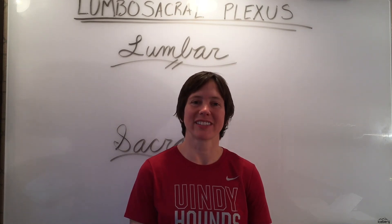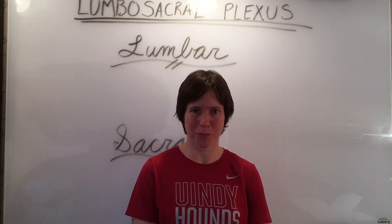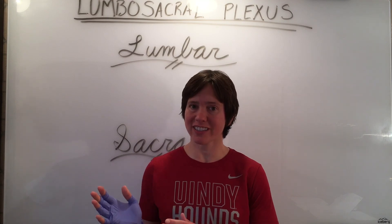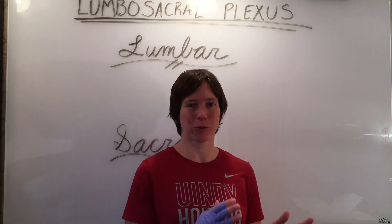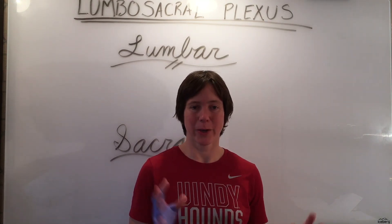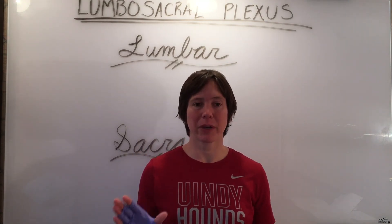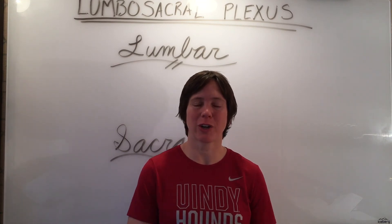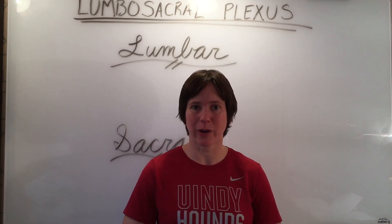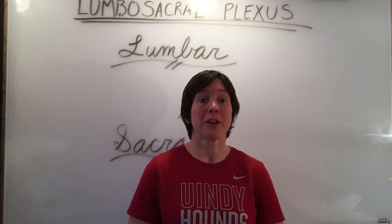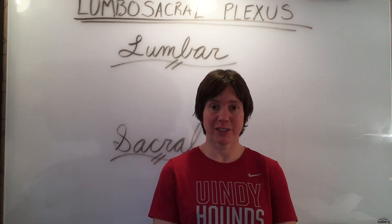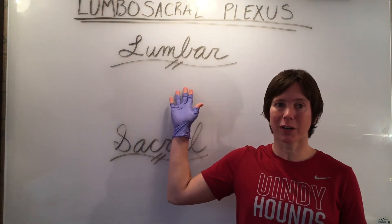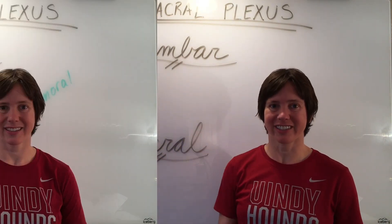The lumbosacral plexus consists of two parts: the lumbar plexus and the sacral plexus. We'll divide the two and look at the major nerves in each before we draw this out into a large chart that will be easy for you to study. So first we'll start with the lumbar plexus.